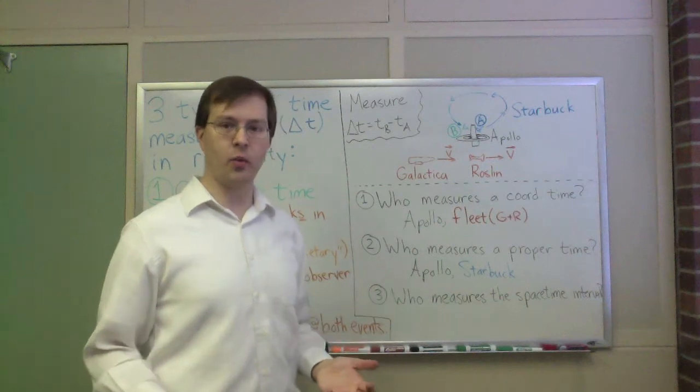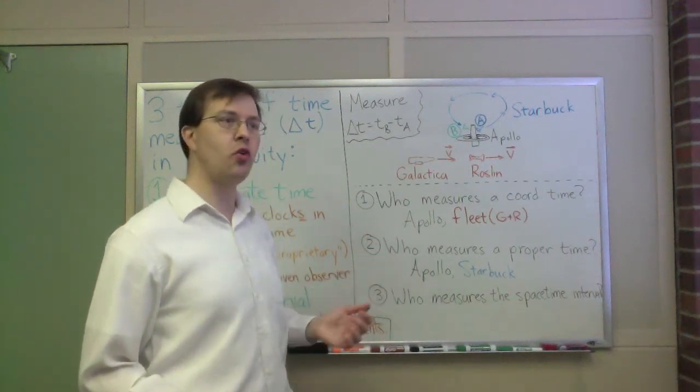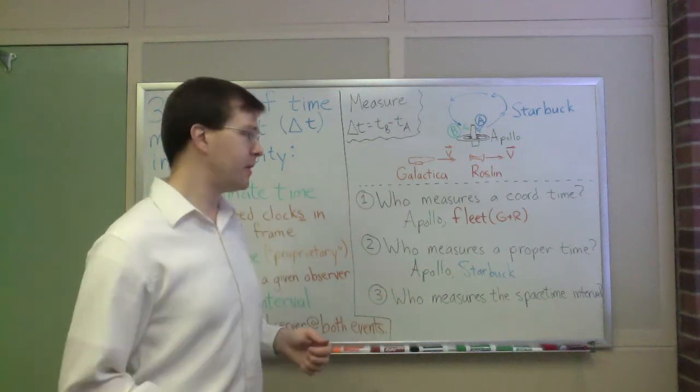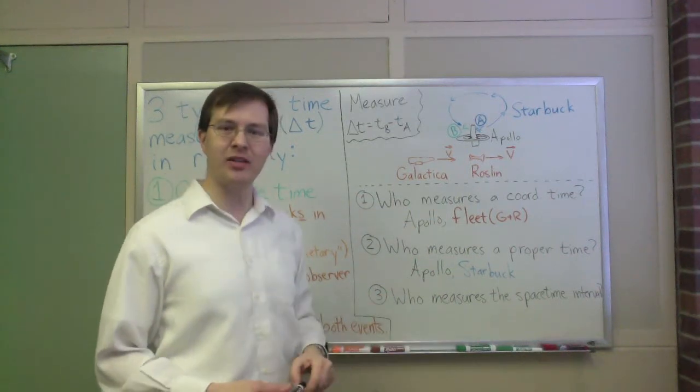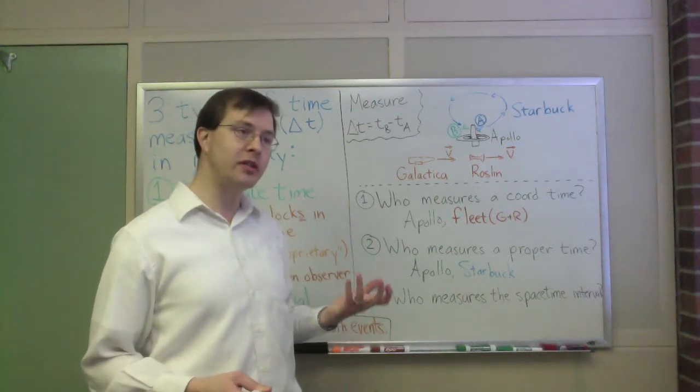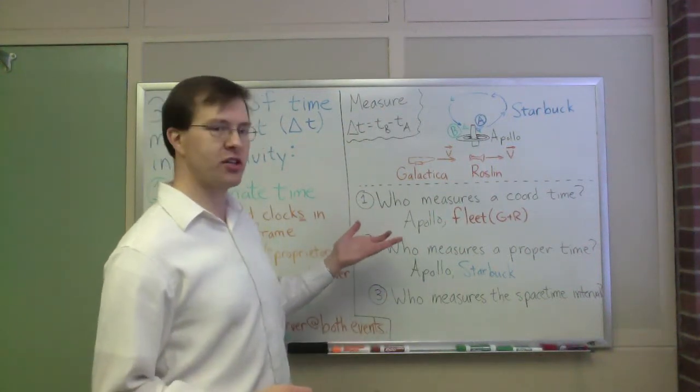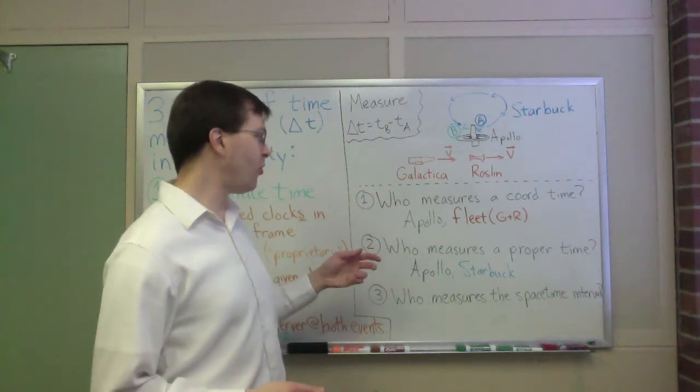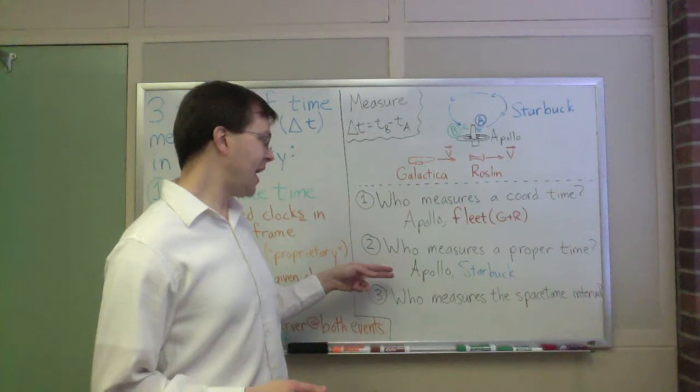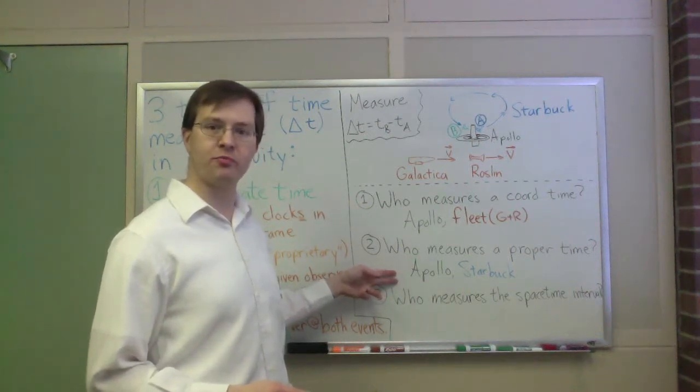Finally, is there anyone in this story who measures the space-time interval between event A and event B, and if so, who is it? Well, there's actually an easy way to do this, since we've already answered the first two questions. The space-time interval is the unique time measurement in relativity that is both a coordinate time by some inertial observer and a proper time by a single observer who is present for both events.